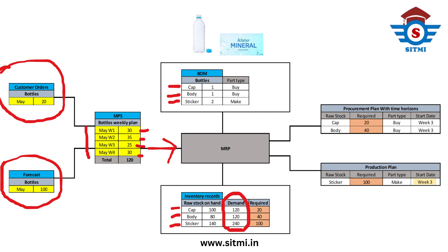Considering on-hand quantity and required demand, the required quantity to manufacture or produce is 20 caps, 40 bodies, and 100 stickers. In the inventory record, it is also important to understand which raw material is purchased from the supplier and which raw material is manufactured in-house.